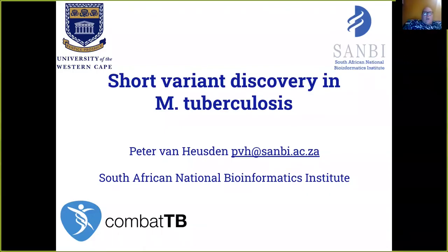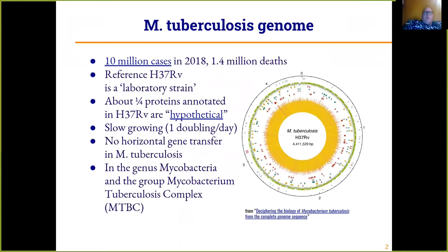I am Peter van Hursten from the South African National Bioinformatics Institute, and welcome to a short talk on short variant discovery in mycobacterial tuberculosis. In 2018, there were about 10 million cases worldwide and 1.4 million deaths from tuberculosis.